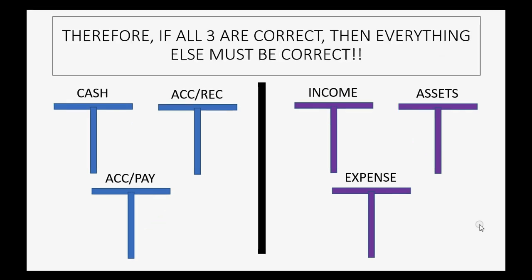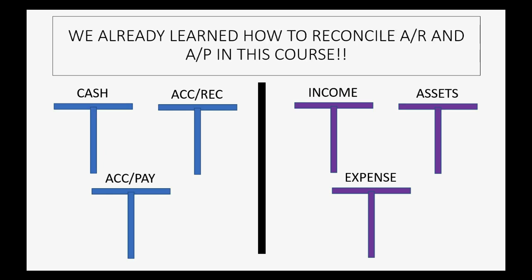Since we have a computer and we enter only each transaction once, that means it must be the same in both places. Therefore, if the transaction is correct in either cash, accounts receivable, or accounts payable, then it's correct in the other account. And if these three accounts are correct, then everything else must be correct. So all we have to do is reconcile our accounts receivable and accounts payable along with cash and credit cards, and we will have proven that our entire set of books and records are correct — and we already learned how to do that earlier in this course.